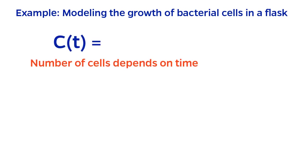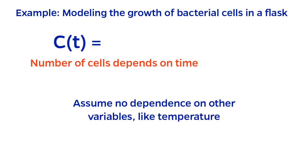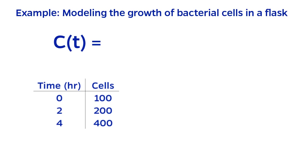Perhaps this is best learned by example. Let's suppose that we wanted to model the growth of bacterial cells in a flask. Here, the number of cells is the dependent variable, and time is the independent variable. To simplify analysis, we'll neglect the effects of any other independent variables, like temperature, or just assume that they're constant.